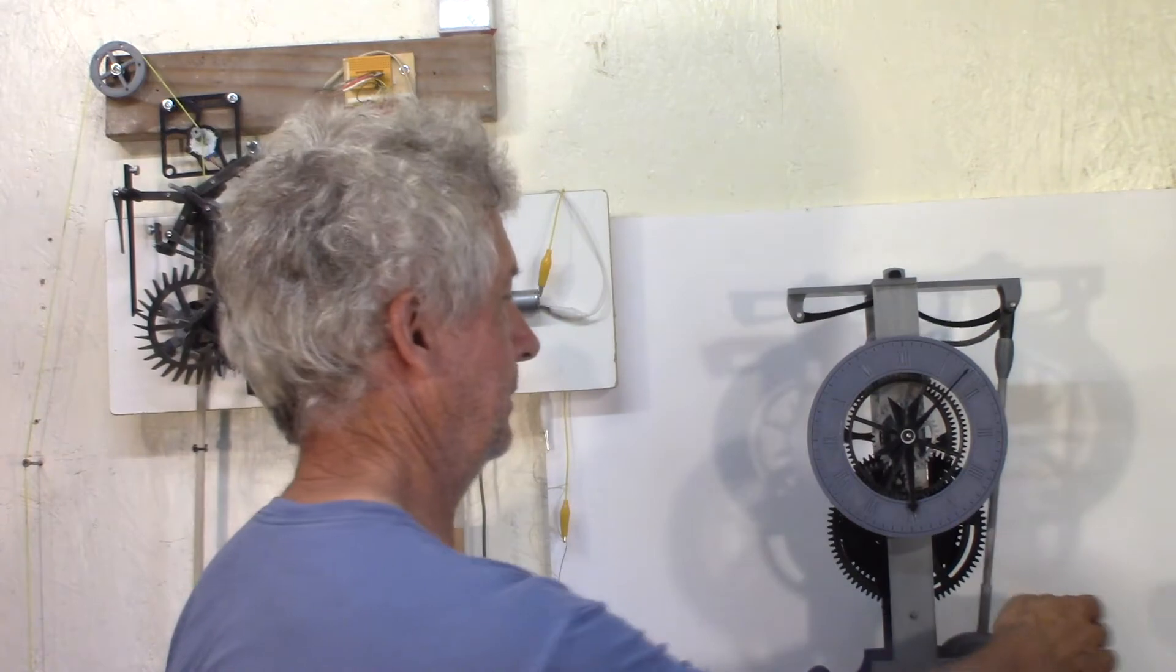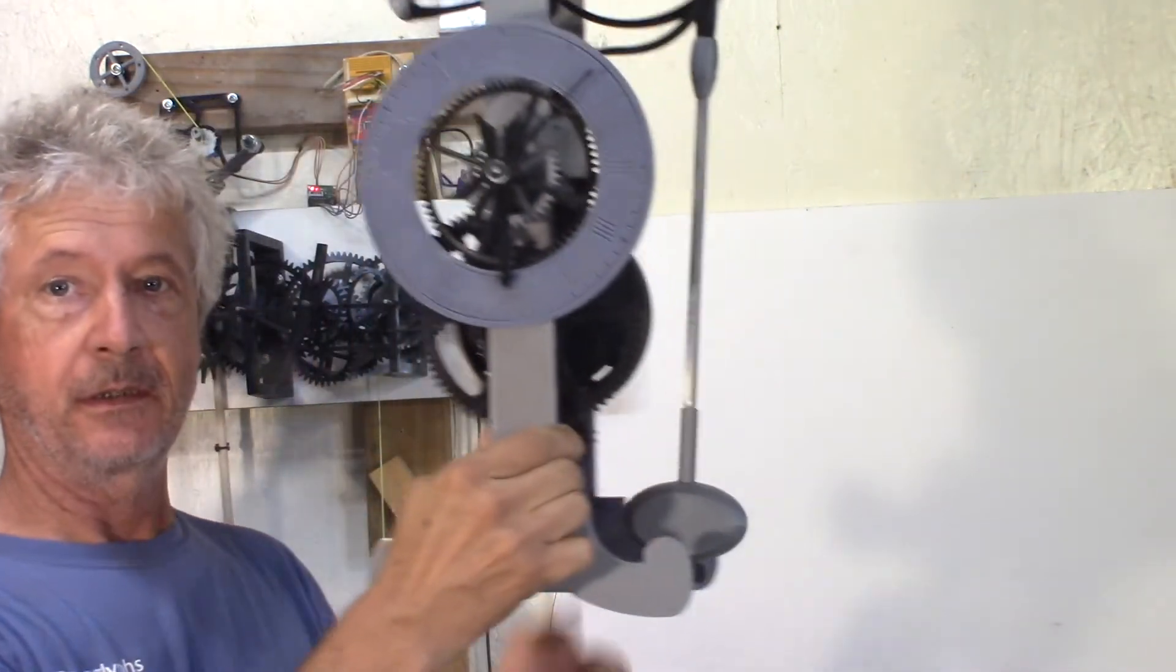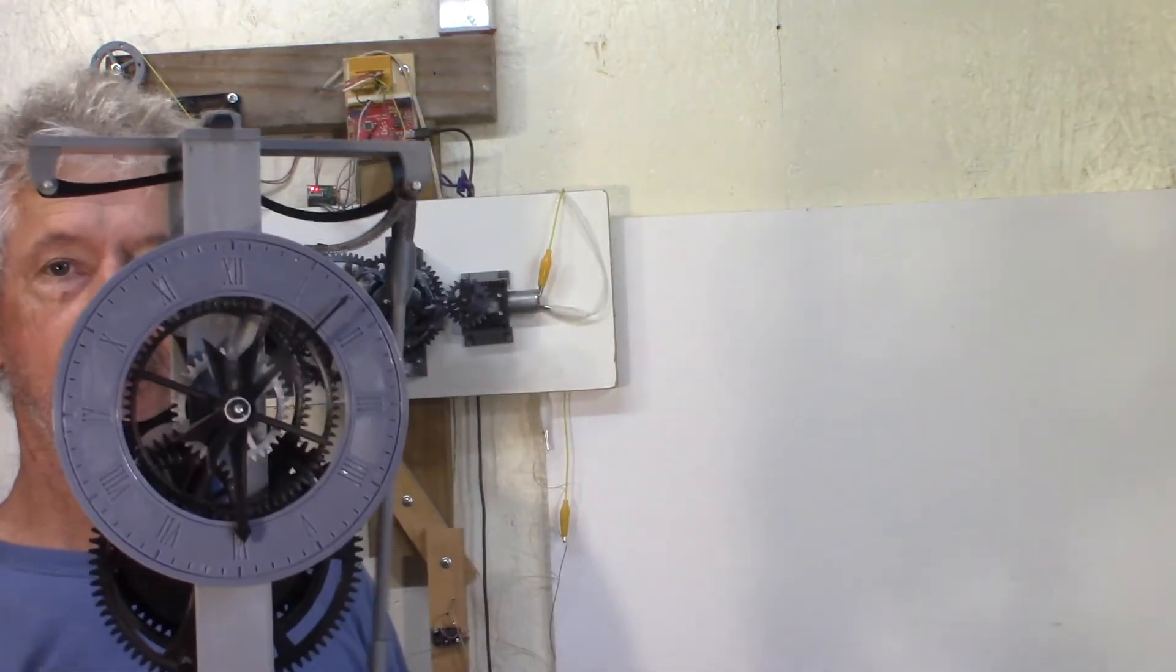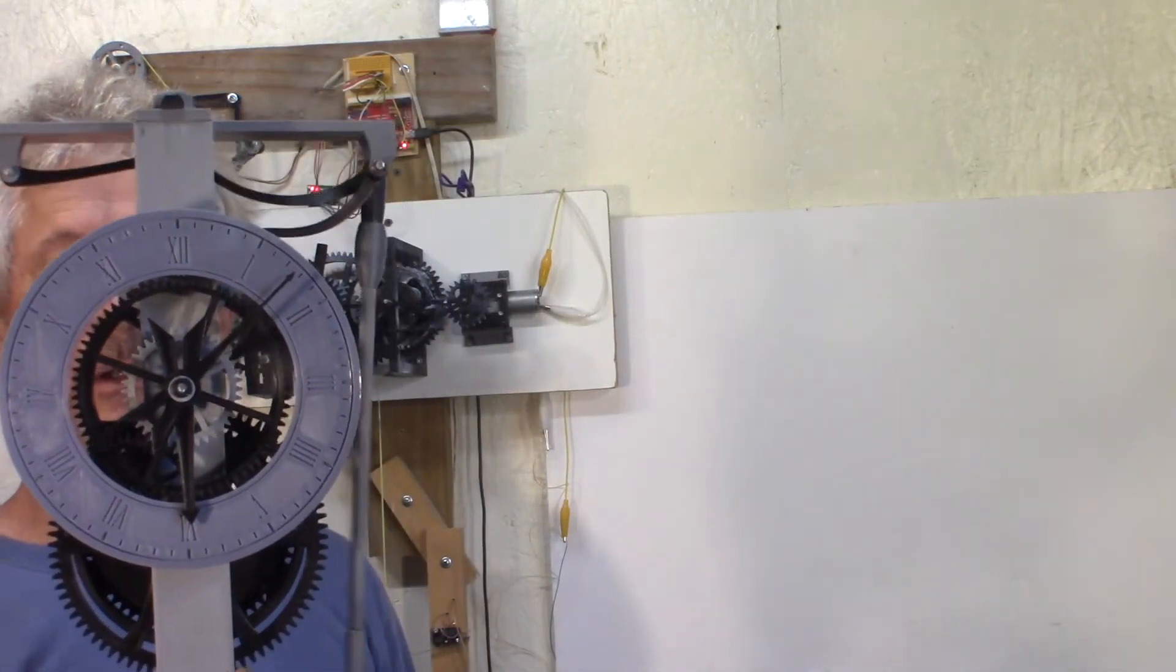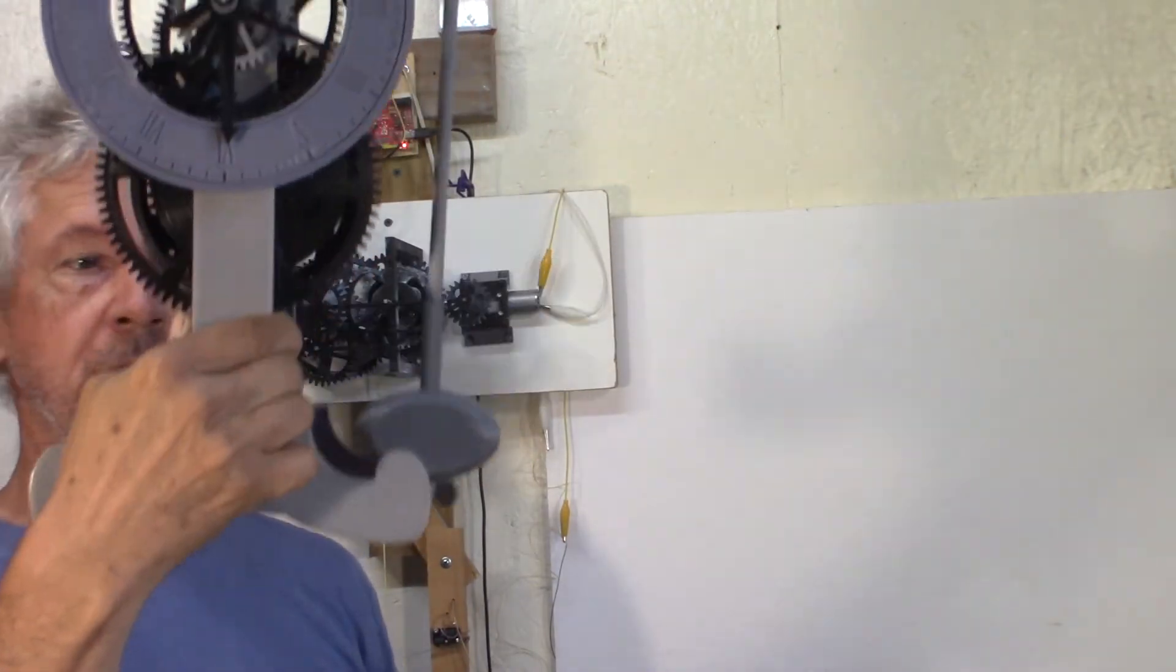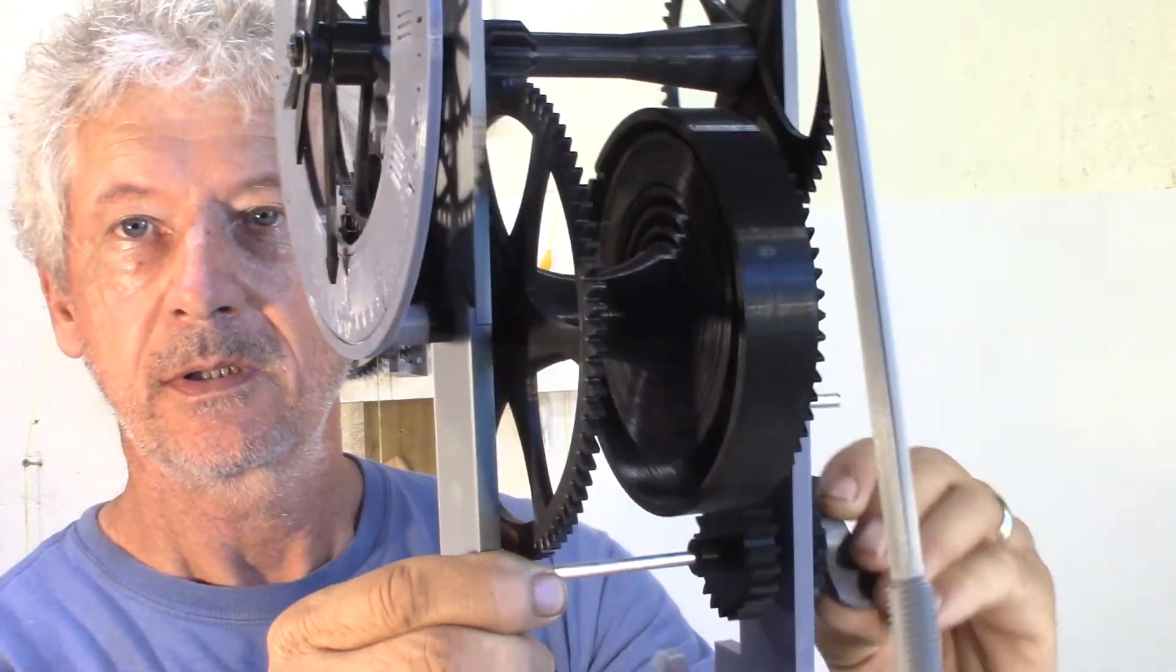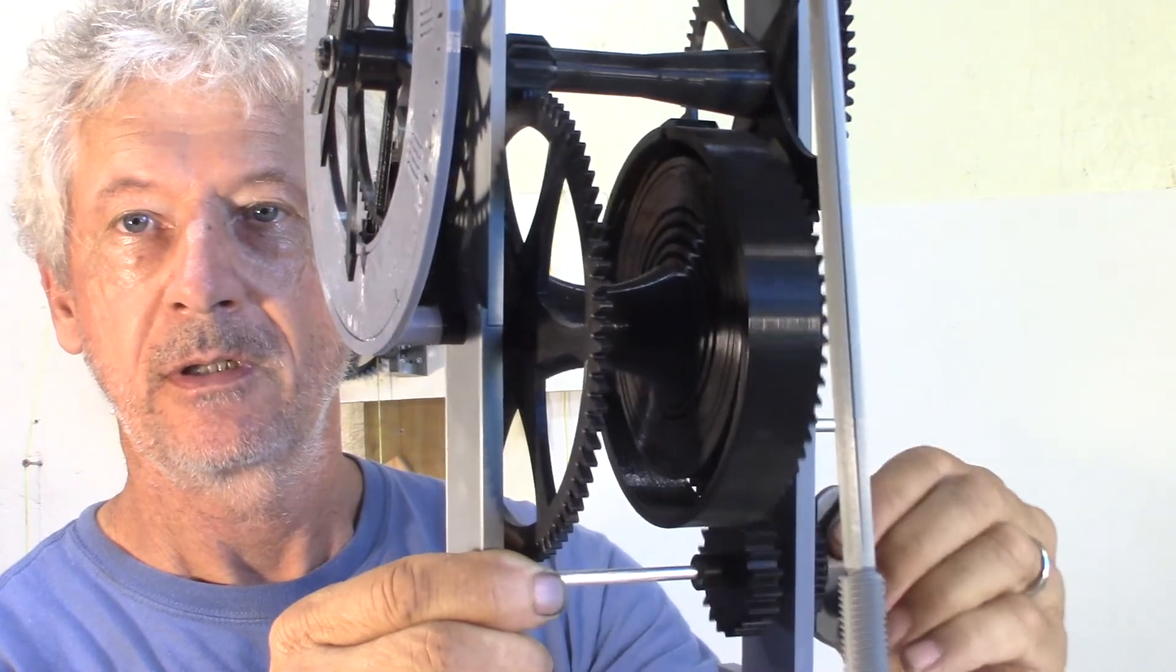So I went back to my Galileo spring-driven clock. The reason why it's a really good model to display: you can move it around, there's no string on the bottom. It's got that drum with the spring and ratchet to rewind.